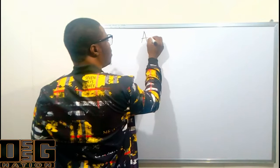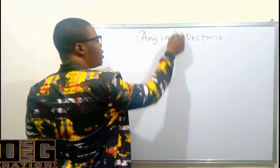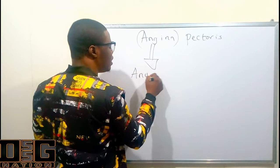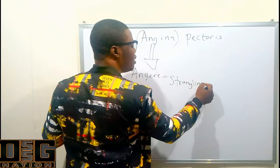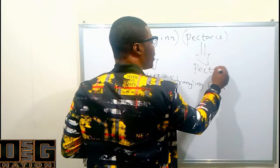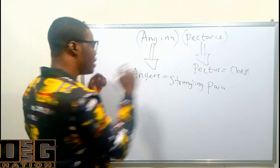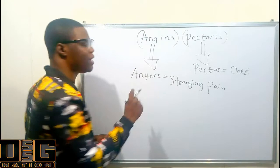Welcome back. We said we are going to be talking about angina pectoris. The word angina comes from the word 'angia,' which means a strangling pain. And pectoris comes from the word 'pectus,' which means the chest. So it is just a characteristic strangling pain at the chest. Angina pectoris is a disorder of the cardiovascular system.